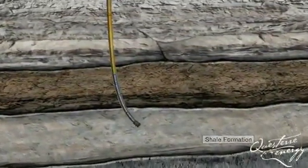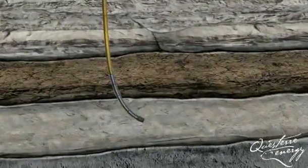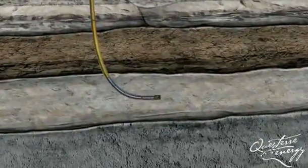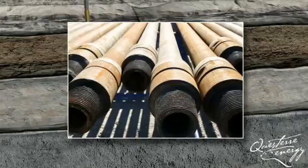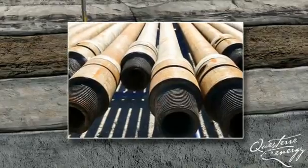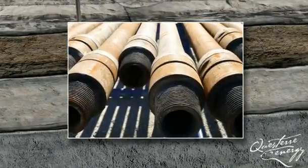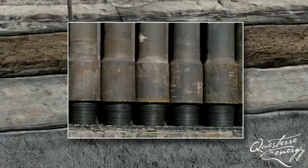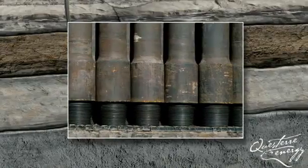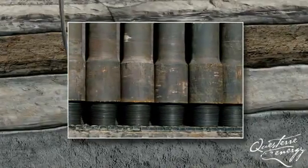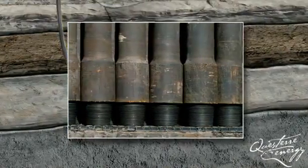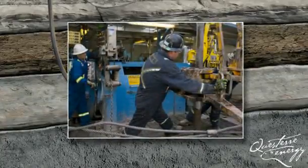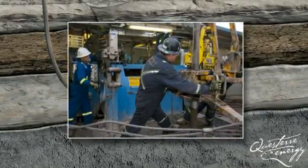Once the curve is completed, drilling begins on the well's horizontal section called the lateral. The pipe used to drill the well measures 9 meters in length, and each length weighs approximately 224 kilograms. It takes over 350 pieces of pipe, weighing nearly 79 tons, to drill a 3,200 meter well.